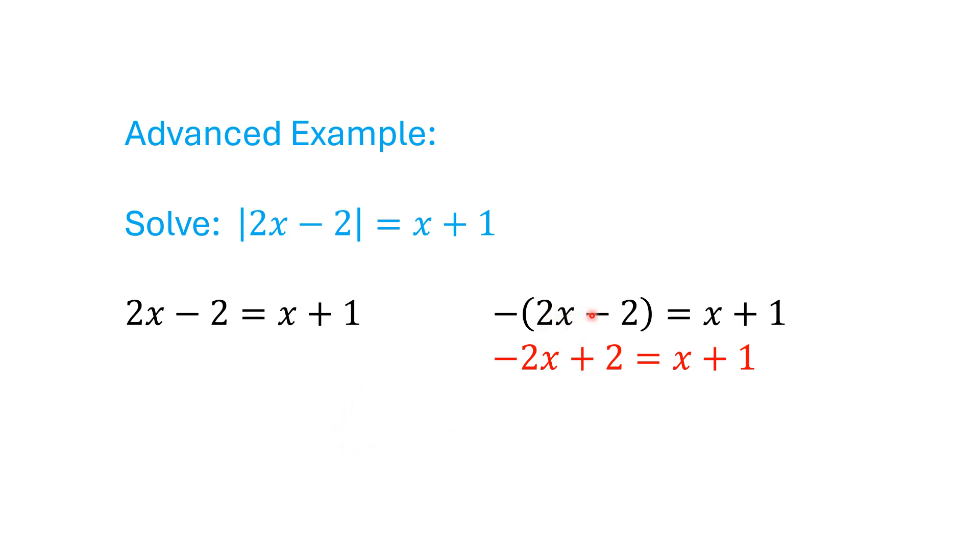And -(2x - 2) = x + 1. While taking the symbol grouping out by running a -1 through and distributing, we get -2x + 2 = x + 1.